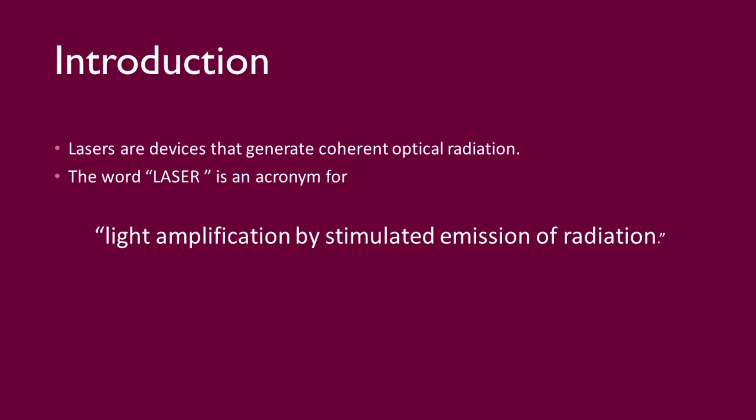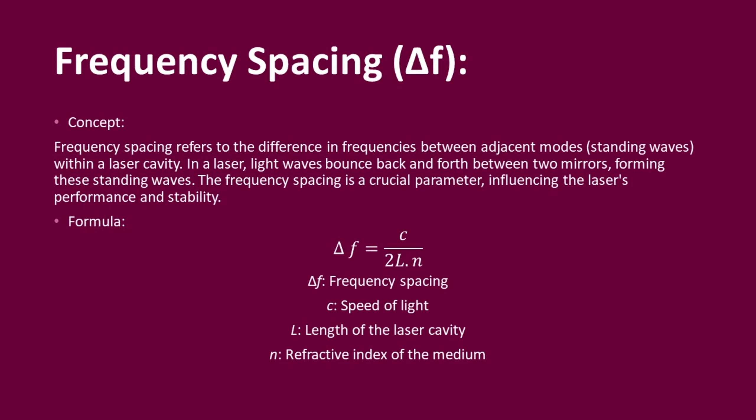The first concept is frequency spacing. Frequency spacing refers to the difference in frequencies between adjacent modes or standing waves within a laser cavity. If a laser produces different frequencies, the difference between adjacent modes is given by the formula: delta f equals c divided by 2L multiplied by n, where delta f is the frequency spacing.